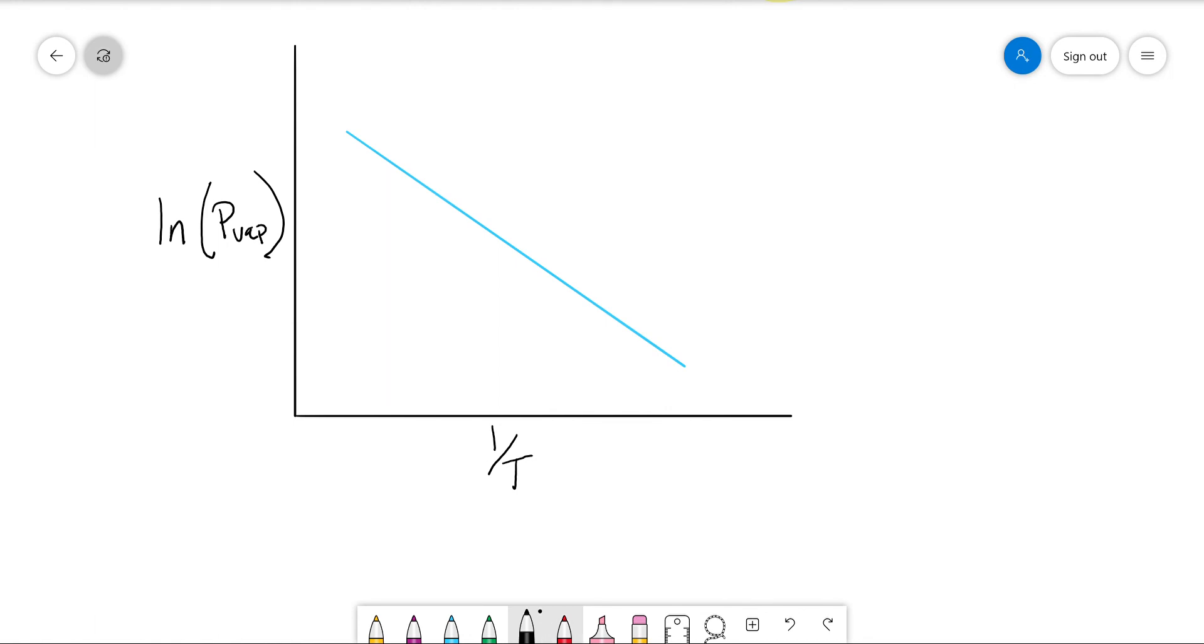And we will get some equation. You would do this on Excel or a graphing program. And you get Y is equal to M X plus B. You get an equation that looks like that.